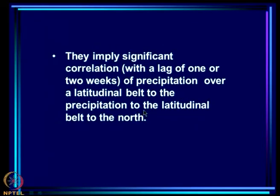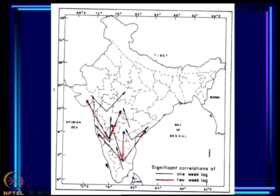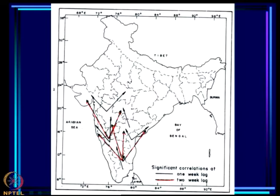This implies that the band is moving northward from the equatorial Indian Ocean across the Indian peninsula. If the band is moving, there will be a correlation between south and north with a lag. With a 1-week lag (black arrows), a band here is correlated with a band further north. With a 2-week lag, rainfall in one location is correlated with rainfall further north still, reflecting the northward movement of the band.